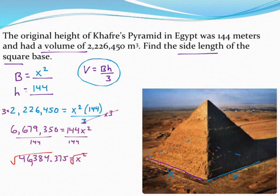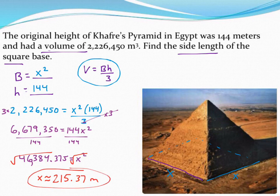So finally finishing out this problem with my calculator, that side length comes out to be about approximately 215.37. And then since this is just a side length, meters. So about 215 meters would be the square base of that pyramid.